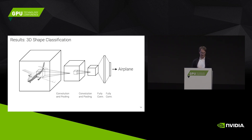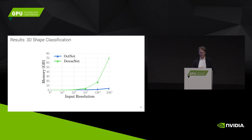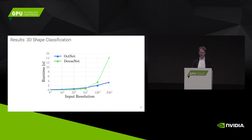Let's look at some results of this OctNet framework. The first task is standard 3D shape classification: the input is a 3D shape as a mesh, we voxelize it, push it through an OctNet architecture, and output a class label like Airplane. It's a simple encoder architecture. Looking at memory requirements, compared to the dense network we can now even at 256 cube resolution still process on a Titan X. We also get a little bit of improvement in runtime for higher resolutions, with a small overhead for smaller resolutions where we use a dense network anyway.